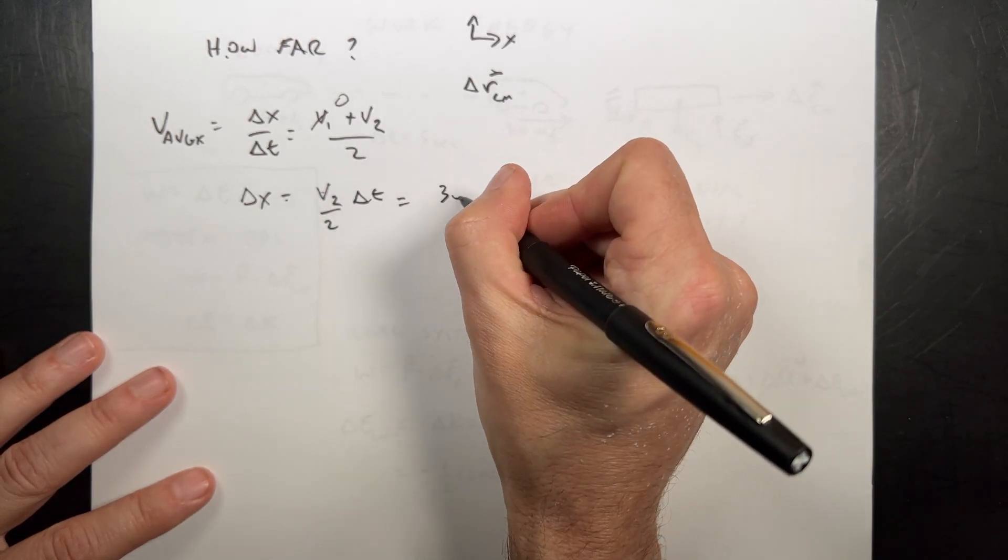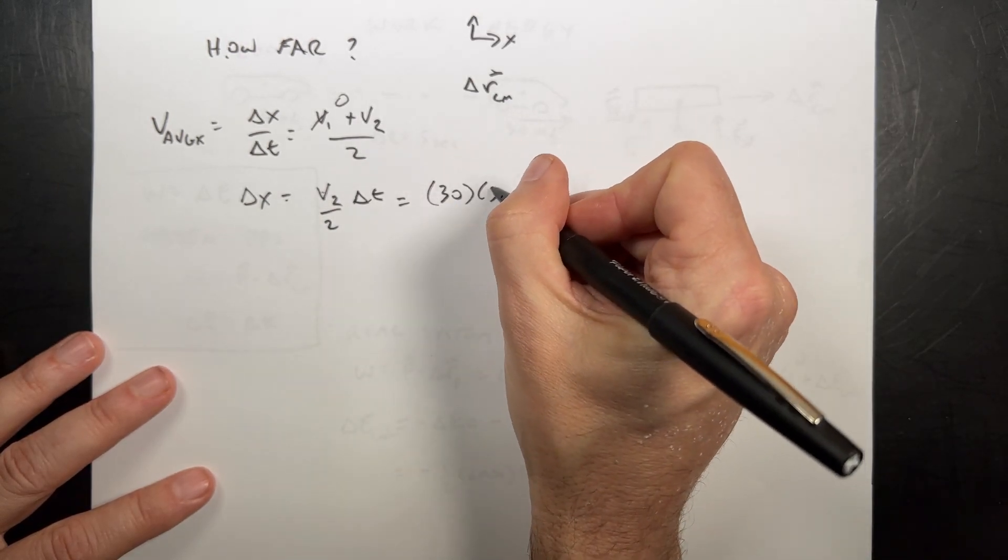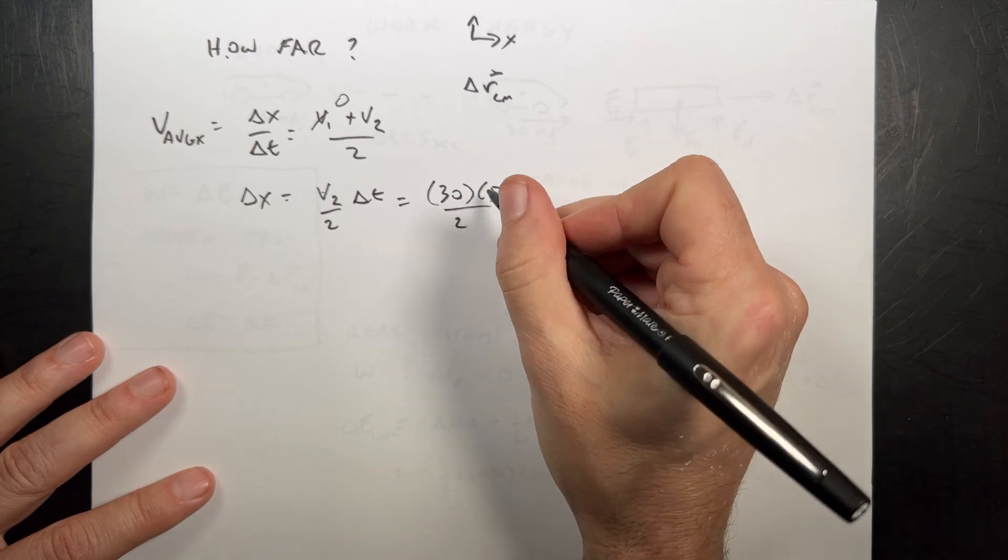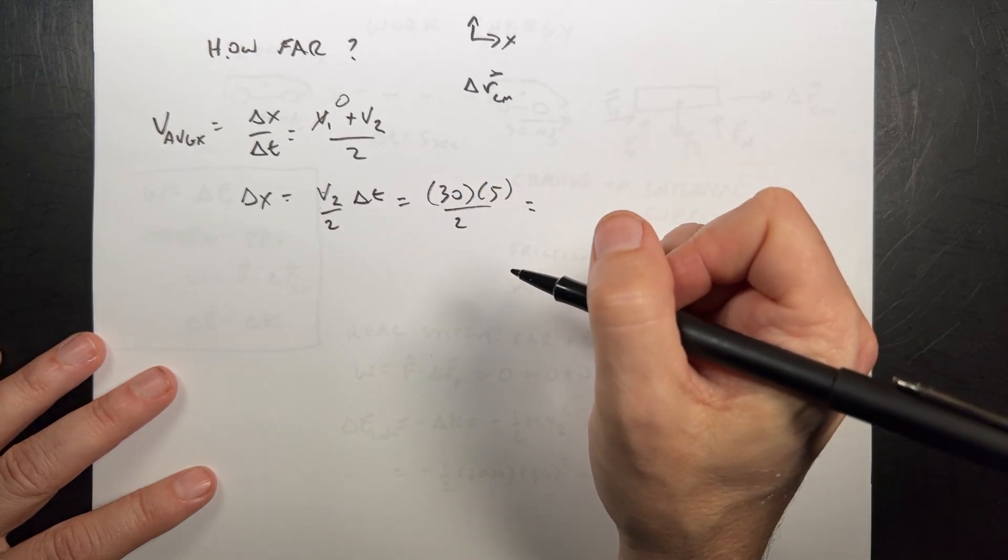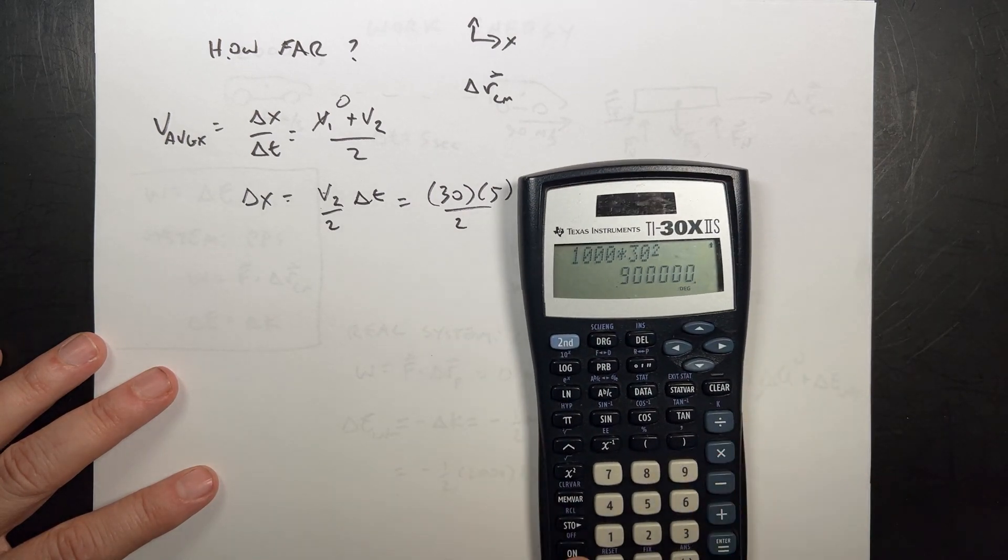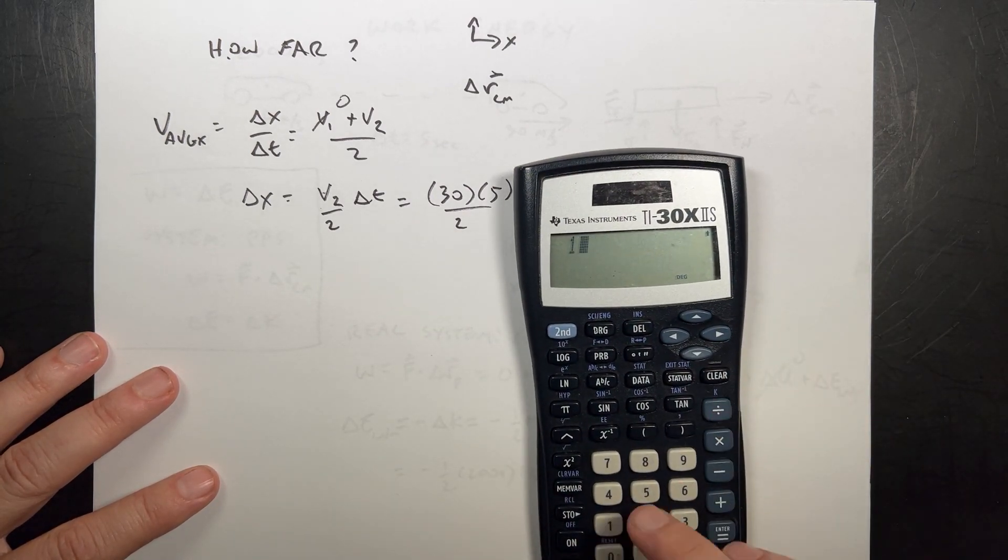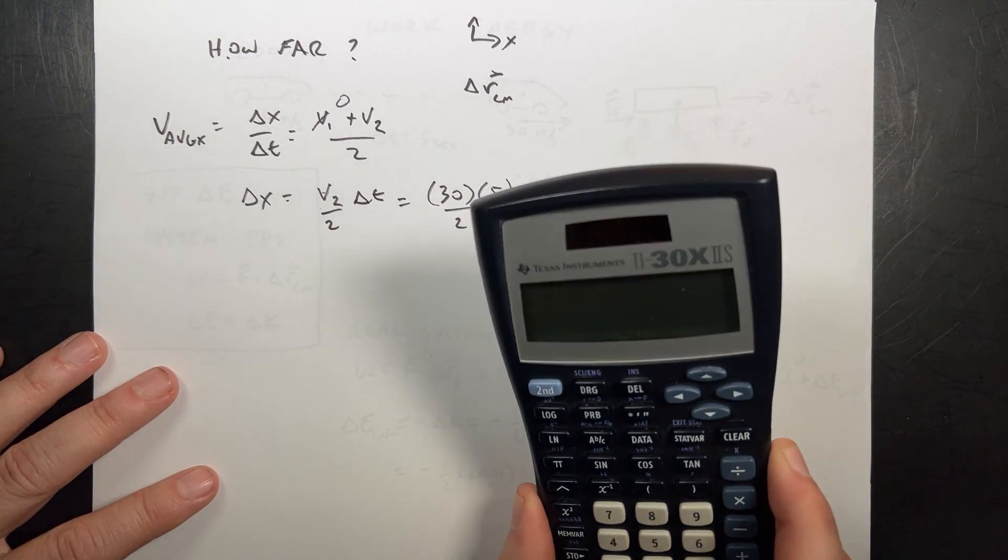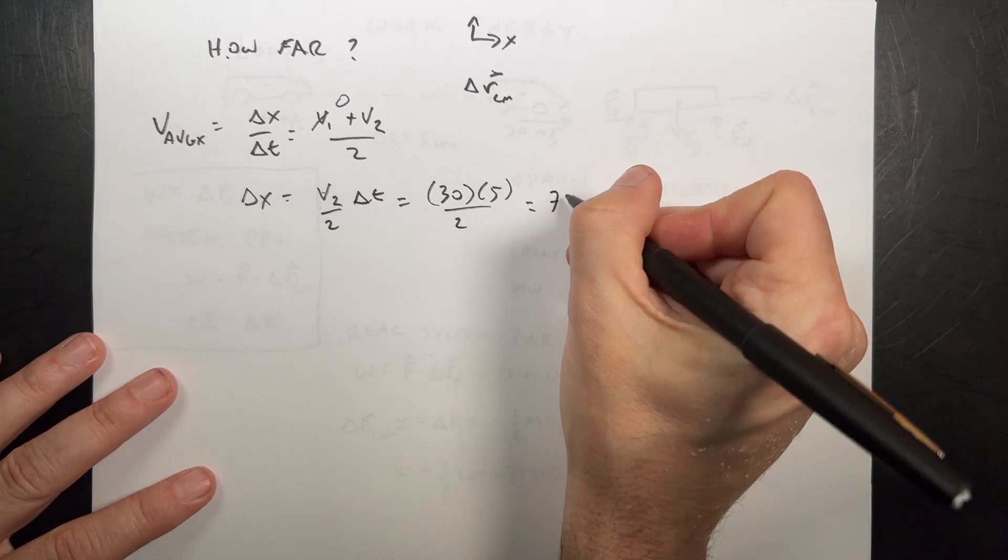And let's just go ahead and get this. 30 times 5 over 2. So 15 times 5 is 50. Is that 70? 15 times 5. You do kind of have trouble. Yeah, I thought it was 75. 75 meters.